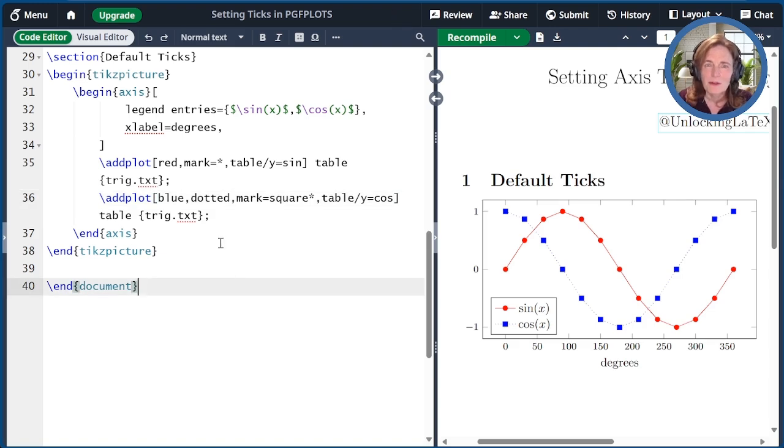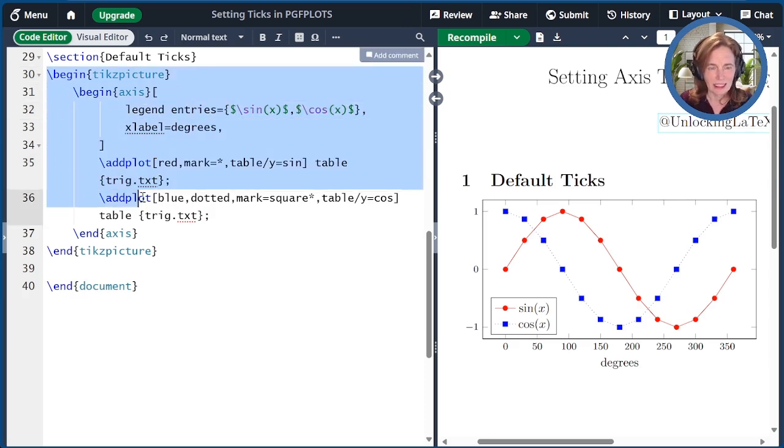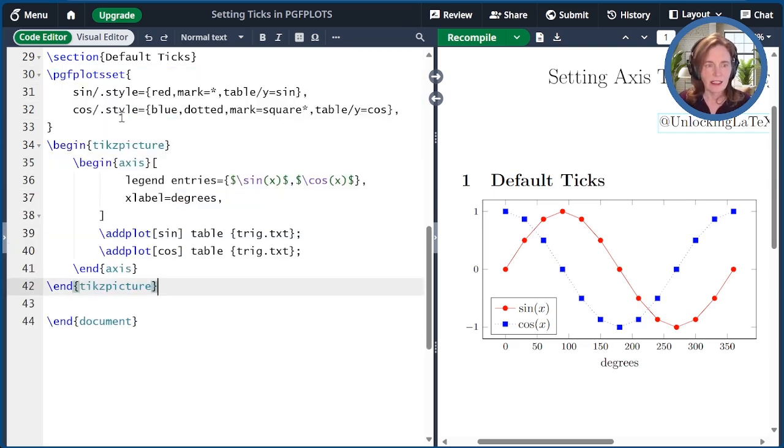To make the code neater moving forward, I create two styles in pgfplot set that I can use over and over again. These styles are named sine and cosine, and they specify the look as well as the table column for the y values. When I recompile this with the changed code, the plot is unchanged. This will make things simpler moving forward.